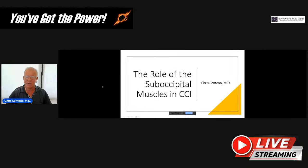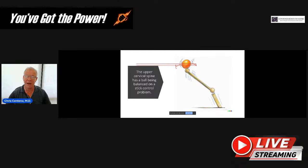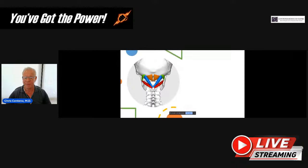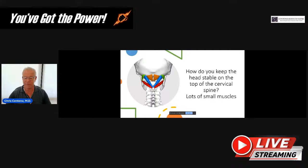We're talking about the role of the suboccipital muscles and craniosacervical instability, or CCI. So the upper cervical spine has a ball-being-balanced-on-the-end-of-a-stick control problem. We have this ball at the end of the stick — the ball obviously is the head — and that ball could fall off in any number of directions, so there's a control issue. One of the ways the body keeps the head stable from an active standpoint on top of the spine is there are lots of small muscles heading in lots of different directions, and those are called the suboccipital muscles.